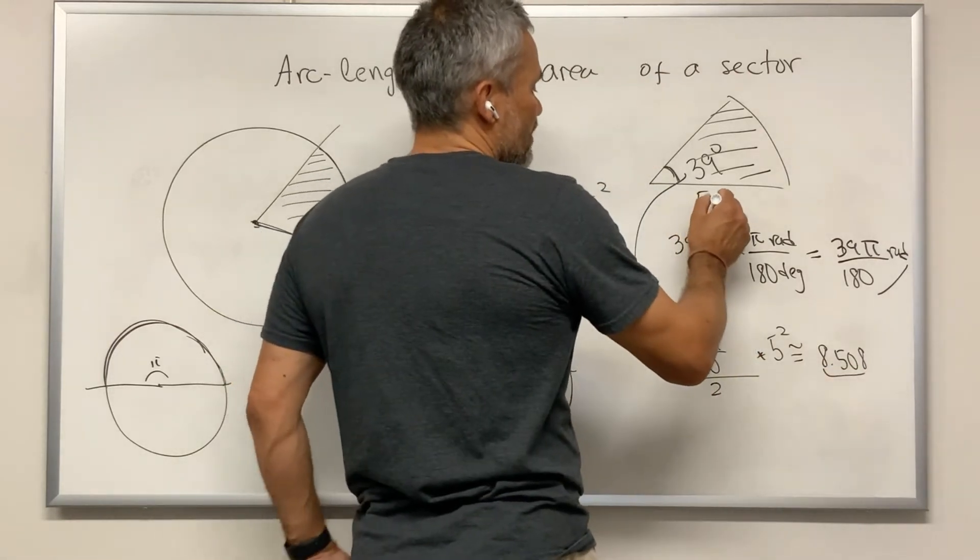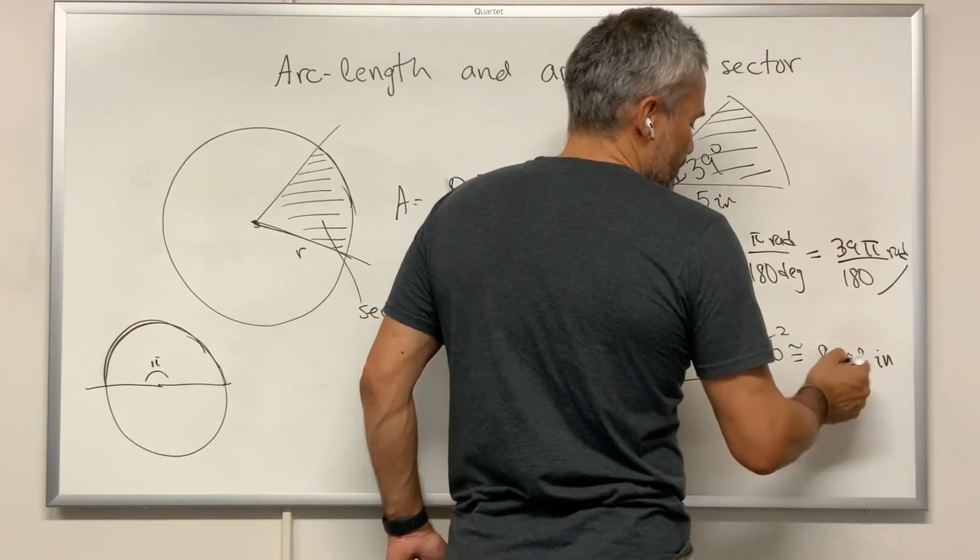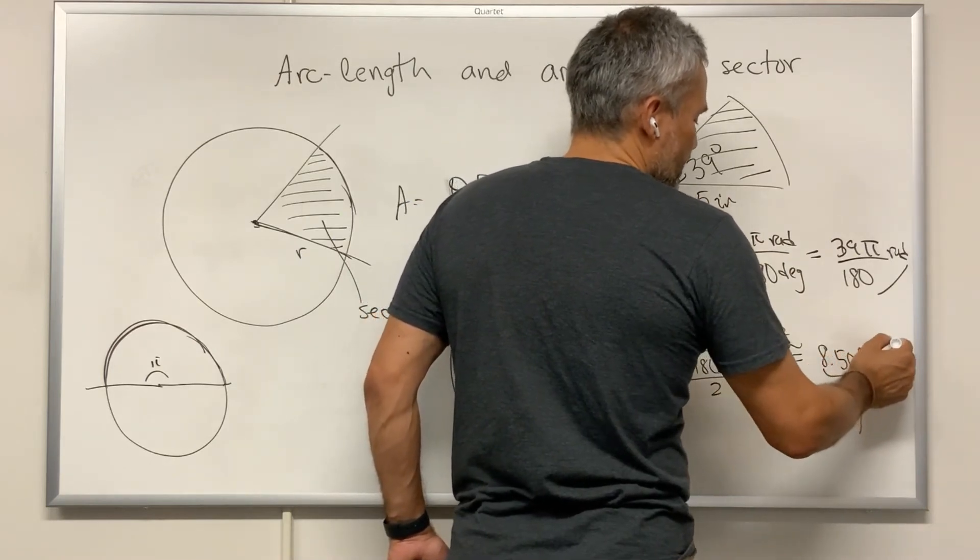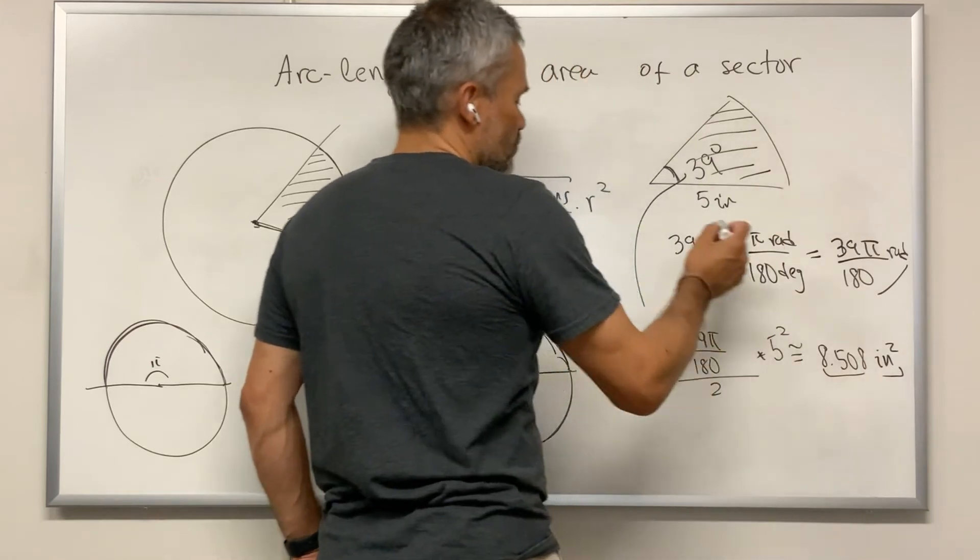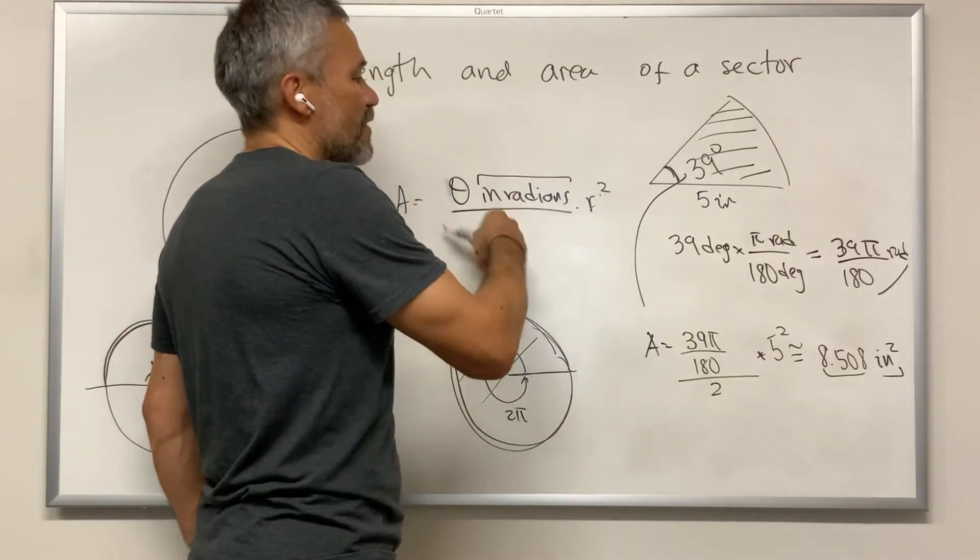If we have that these are 5 inches, then the units here will be 8.508 inches squared because we are multiplying inches times inches. Radians, they don't have any units.